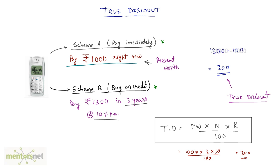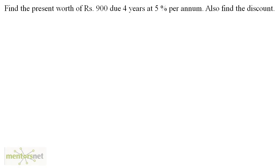Let us solve a problem now. Find the present worth of rupees 900 due in four years at 5% per annum, and also find the discount. You know that true discount is the interest on the principal, that is P×N×R/100. You don't have the present worth — you have to find that too. You have been given the amount, the number of years, and the rate of interest.